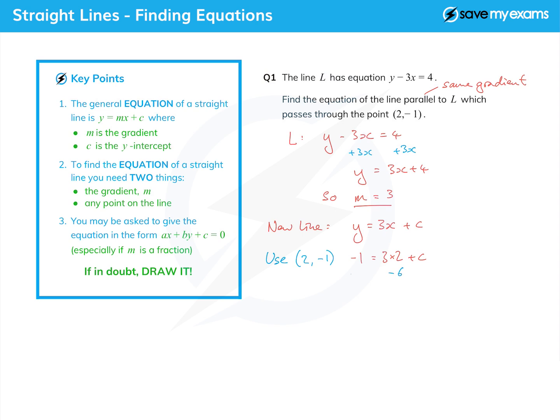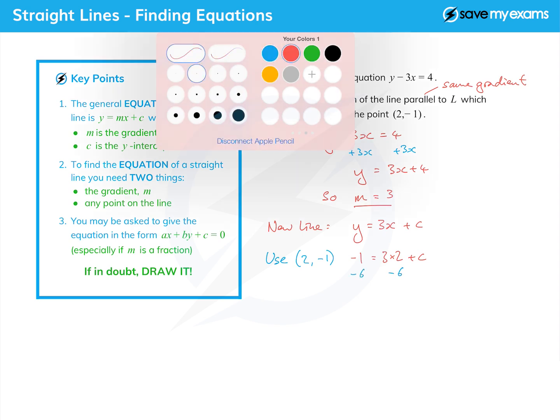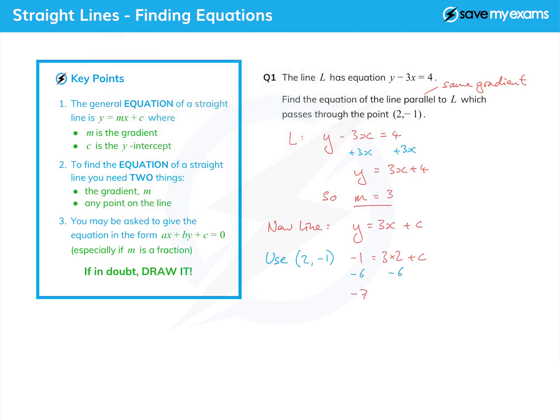I get minus 7 equals c, or c equals minus 7 if you prefer. So finally, I can write down that my new line is y equals 3x minus 7. That's the plus c, and that's that.